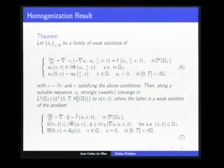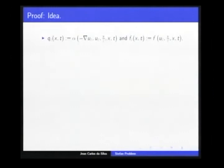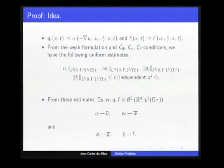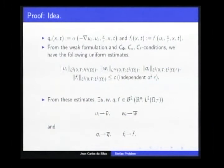Along a suitable subsequence, u-epsilon strongly converges to a function U that satisfies this limit system. Here is the idea of the proof. We take Q-epsilon by this function and F-epsilon by this. Using these conditions, we obtain estimates uniformly in epsilon. Because of the boundedness in space L2, each of them has a two-scale limit, and we obtain weak convergence in the sense of L2, where the bar means the mean value of the corresponding function in the oscillatory variable.